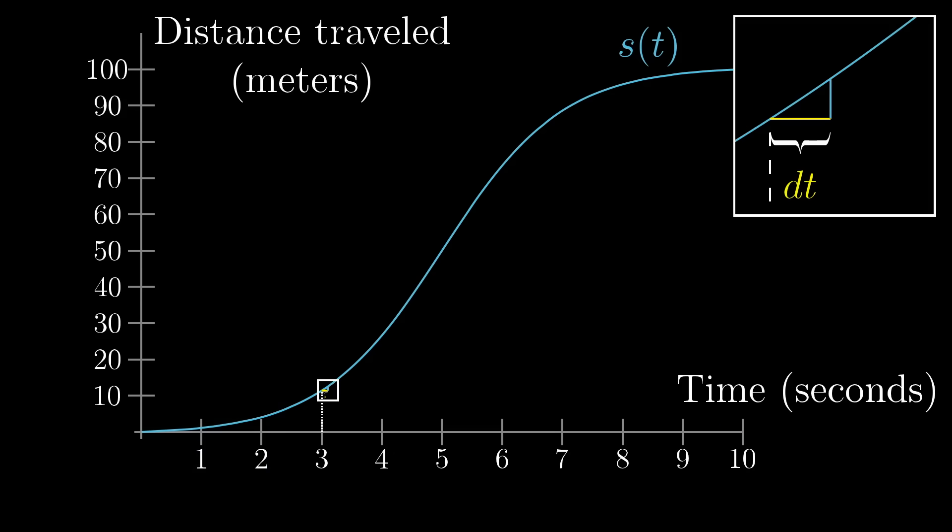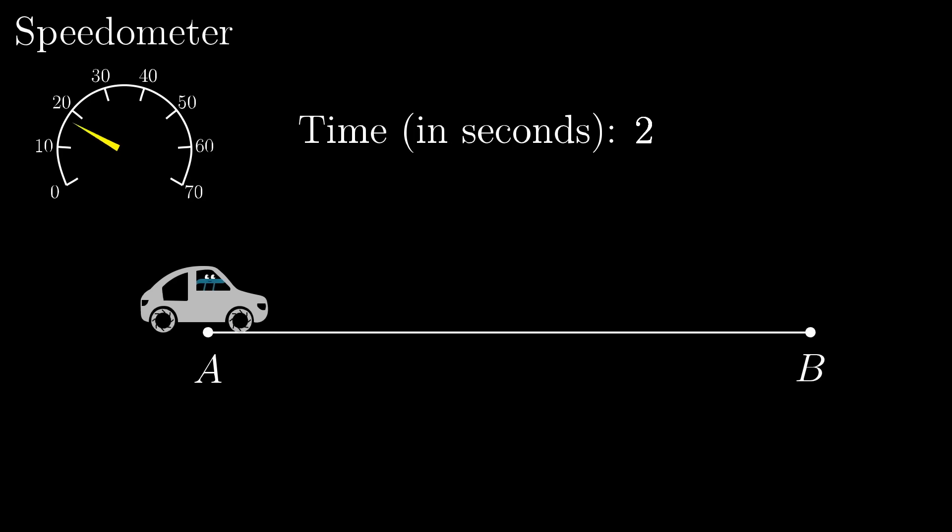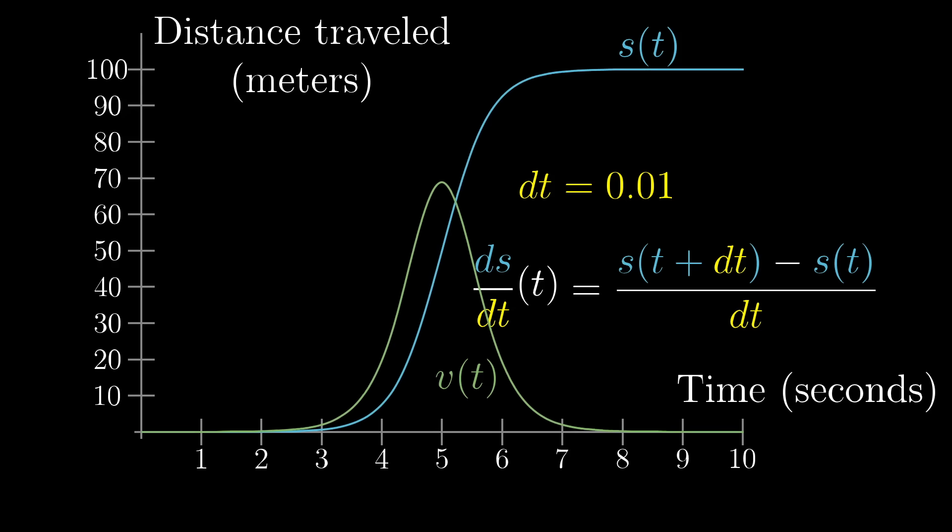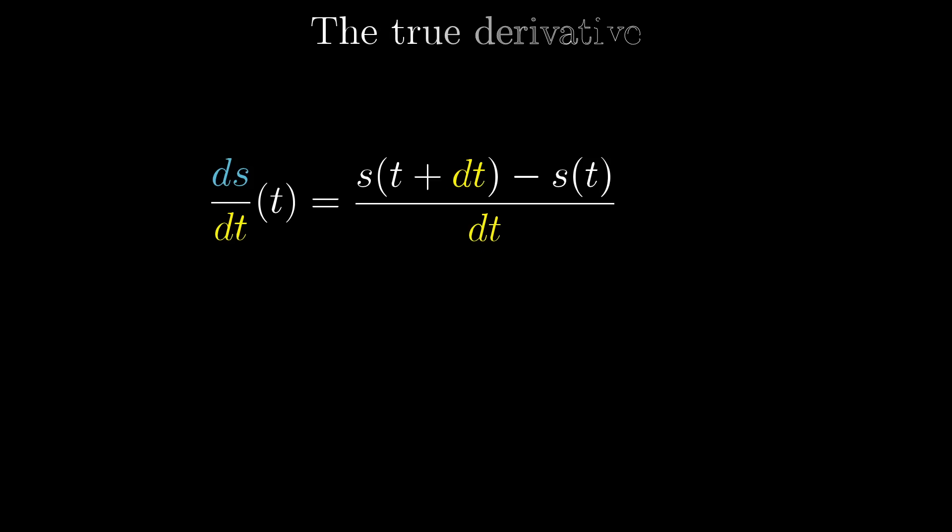This idea of ds over dt, a tiny change in the value of the function s divided by the tiny change in the input that caused it, that's almost what a derivative is. And even though a car's speedometer will actually look at a concrete change in time, like 0.01 seconds, and even though the drawing program here is looking at an actual concrete change in time, in pure math, the derivative is not this ratio ds/dt for a specific choice of dt. Instead, it's whatever that ratio approaches as your choice for dt approaches 0.